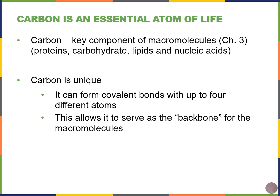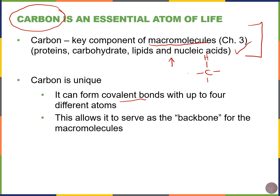Our next topic is carbon. Remember, carbon was one of those four most common elements — CHON — in living organisms. We're also going to see it a lot in the next chapter when we talk about large molecules. Carbon is unique because it can form covalent bonds with up to four different atoms. When dealing with the four macromolecules, we're going to see carbon bonded to at least three hydrogens, and sometimes in long chains. This allows carbon to serve as a backbone for many of these macromolecules.